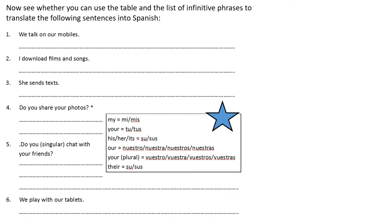So: we talk on our mobiles. There are two parts to most of these sentences — the verb and then the rest. You're looking for 'we talk', and we know that to speak is hablar, and the we form takes -amos. So you should have hablamos. And then checking back with your translation, on our mobiles is just por móvil — no need to make it plural.